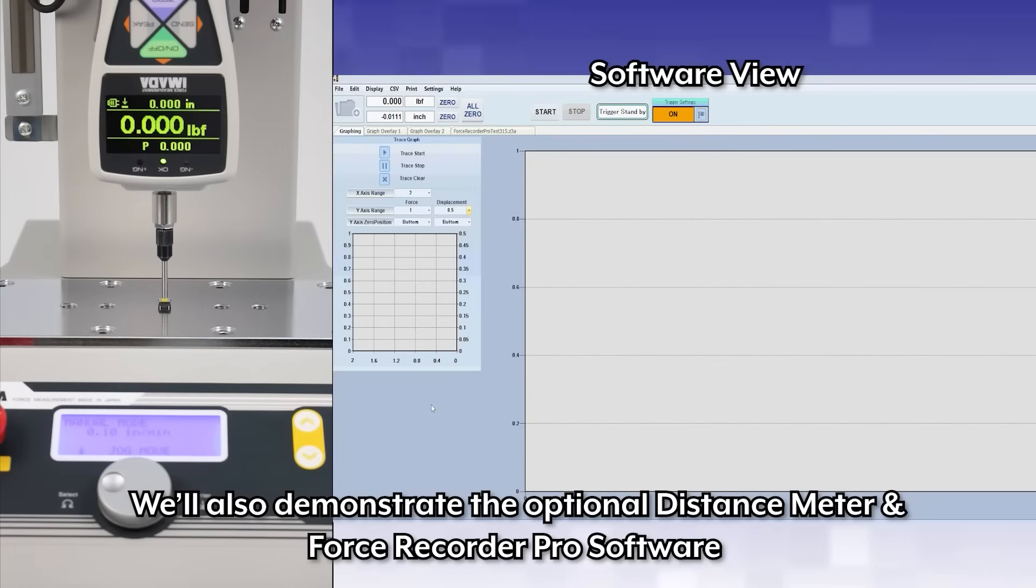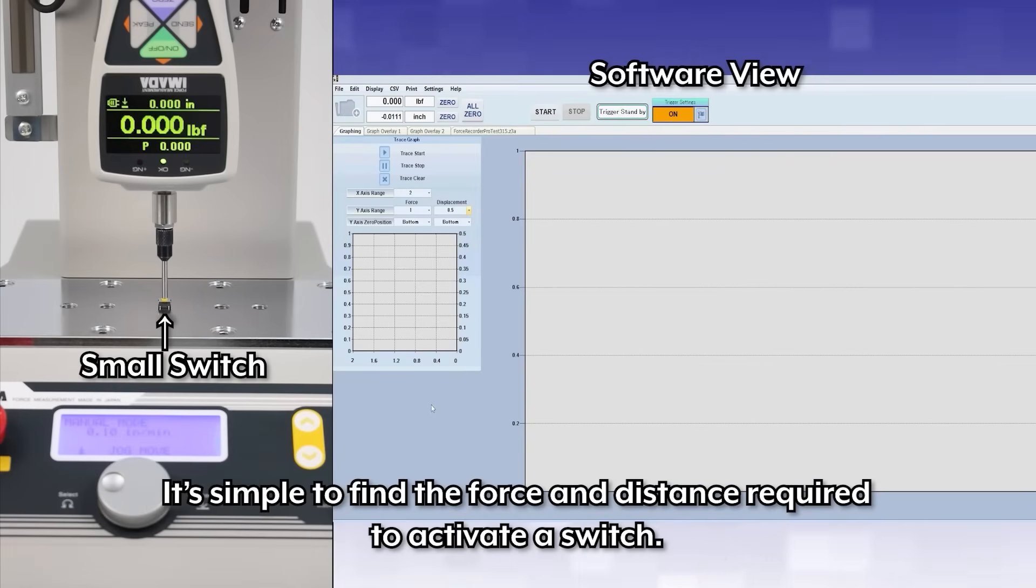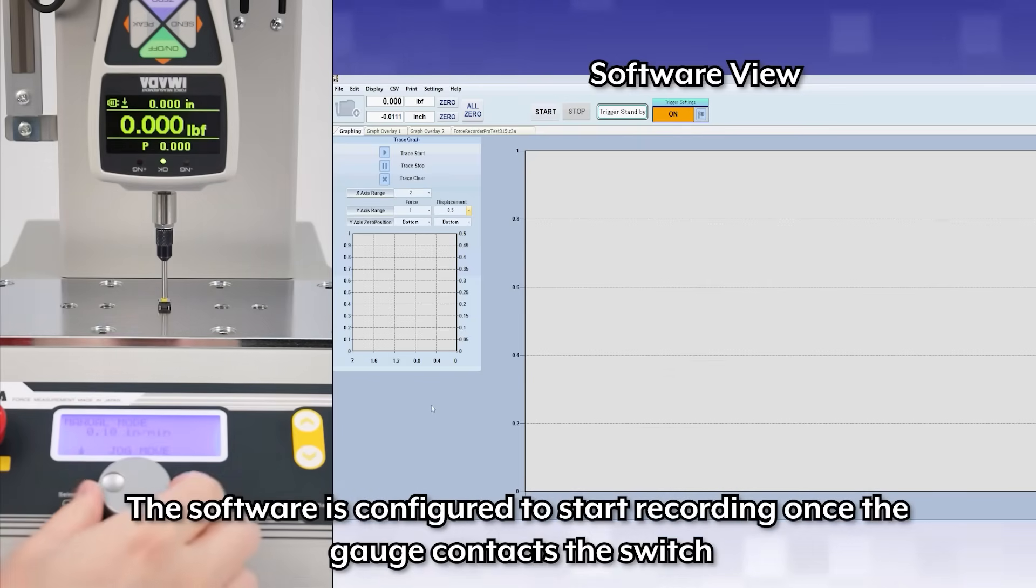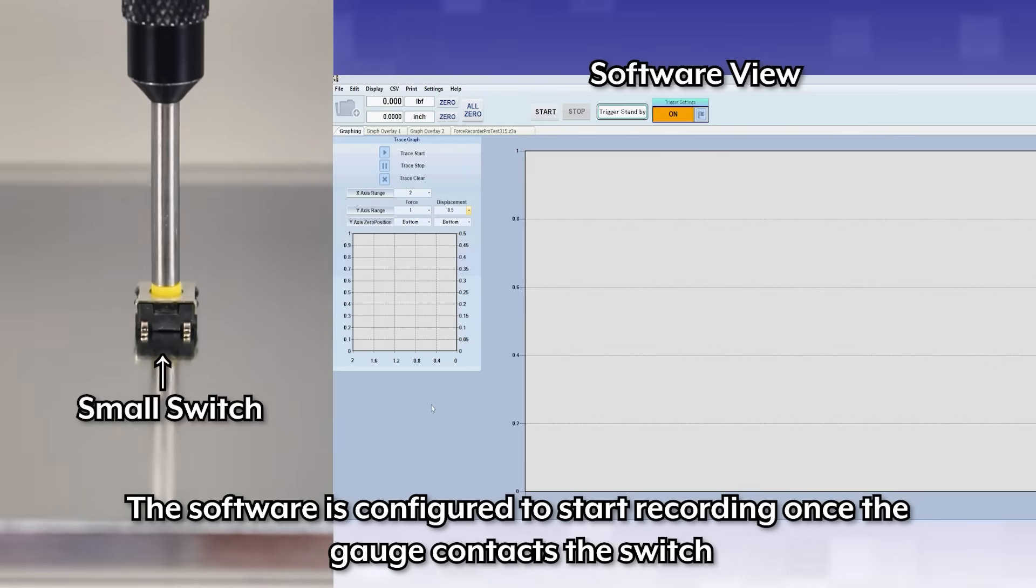We'll also demonstrate the optional distance meter and Force Recorder Pro software. It's simple to find the force and distance required to activate a switch. Software is configured to start recording once the gauge contacts the switch.